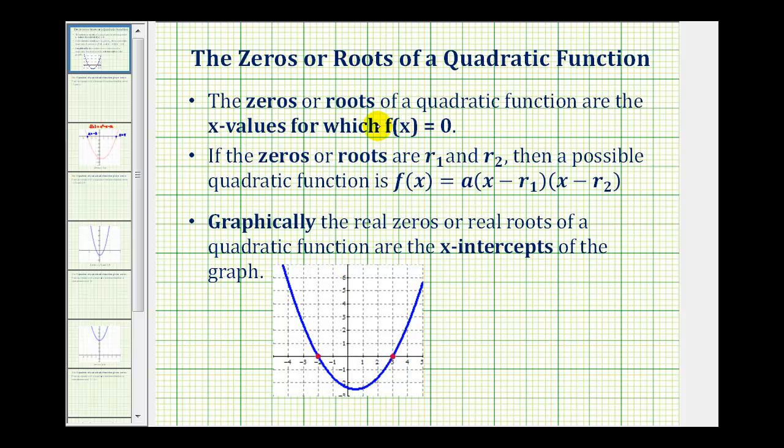The zeros or roots of a quadratic function are the x values for which f(x) is equal to zero. So if we're given the zeros, it tells us something about the factored form of the quadratic function.